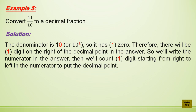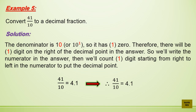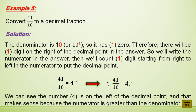Example 5: Convert 41 over 10 to a decimal fraction. The denominator is 10, or 10 to the power of 1, so it has 1 zero. Therefore, there will be one digit on the right of the decimal point. We write the numerator, then count one digit from right to left to place the decimal point. Therefore, 41 over 10 equals 4.1. The number 4 is on the left of the decimal point, which makes sense because the numerator is greater than the denominator.